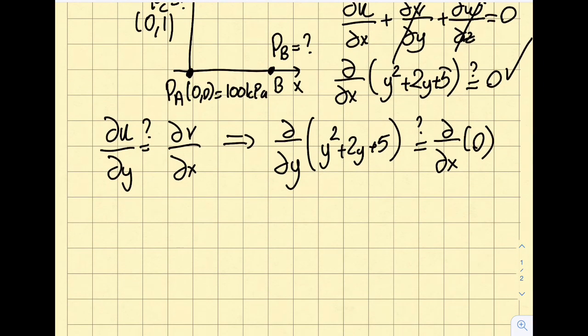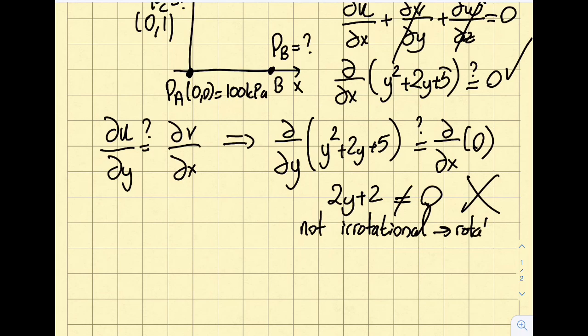So you can see here, I got myself 2y plus 2, which is not equal to 0. So this is not really satisfied, not irrotational, so I will call this rotational flow.